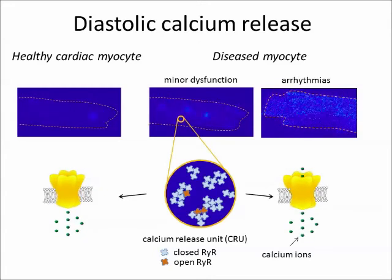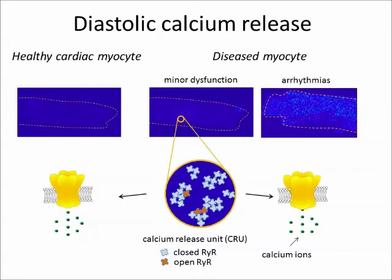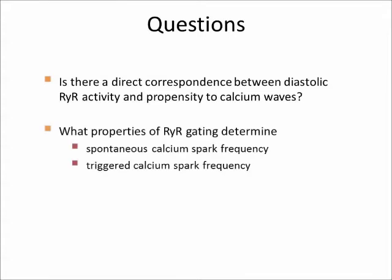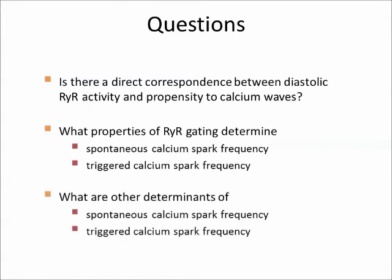The increased calcium leak in cardiac diseases is supposed to be caused by increased open probability of the ryanodine receptors, but the relationships between RYR activity and calcium wave formation are not sufficiently understood. In this work we ask: Is there a direct correspondence between the activity of ryanodine receptors and the tendency for initiation and propagation of calcium waves? What are the determinants that control the occurrence of spontaneous sparks and of the formation of triggered sparks that may lead to calcium waves? What is the role of ryanodine receptor gating in these processes, and what other variables play a role?